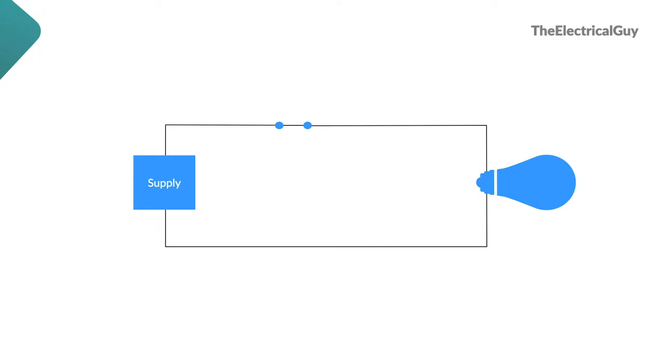Now let's say there is some interruption in this closed path, and because of that, the flow of electron is disturbed or stopped. This situation is called as open circuit.